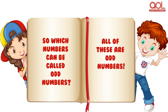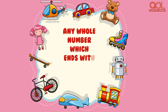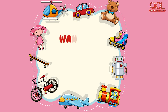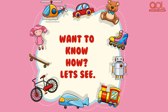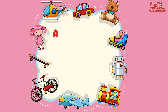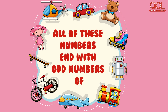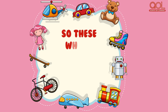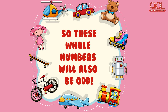All of these are odd numbers. Any whole number which ends with the odd numbers 1, 3, 5, 7 or 9 will also be odd numbers. Want to know how? Let's see! 11, 23, 35, 47 and 59 — all of these numbers end with odd numbers 1, 3, 5, 7 and 9. So, these whole numbers will also be odd.